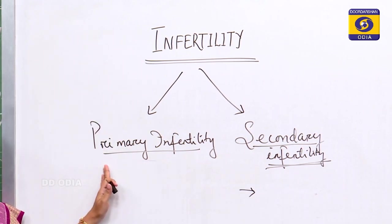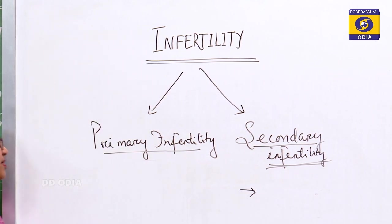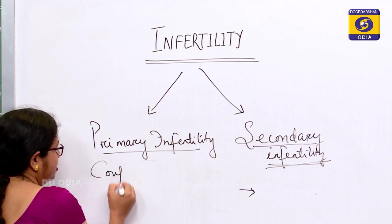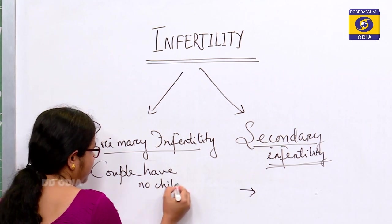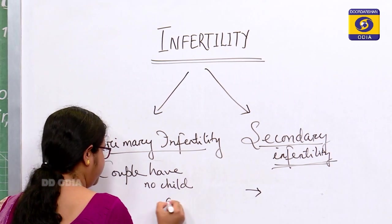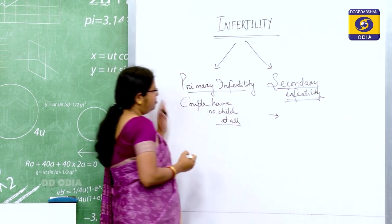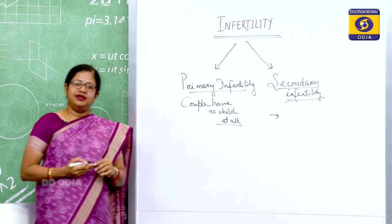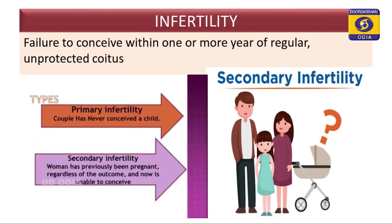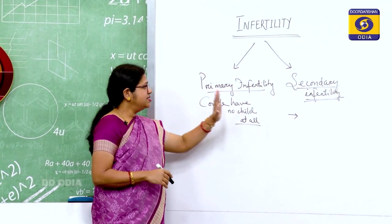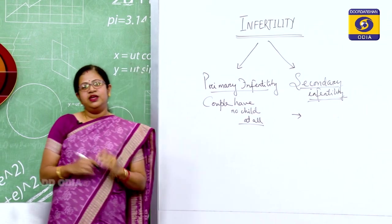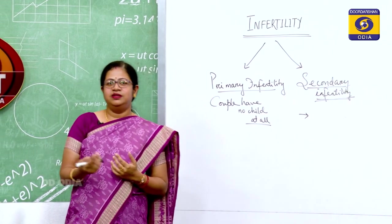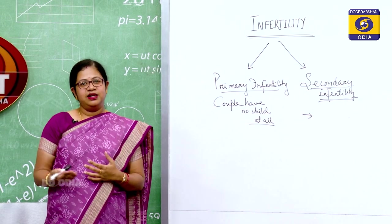Primary infertility is when the couple has no child at all, or they have never had any issue. Now let us come to the causes responsible for infertility. We have primary and secondary infertility, and now the causes associated with them. Sexual reproduction in human beings involves a bi-parental condition — two parents, a mother and a father.